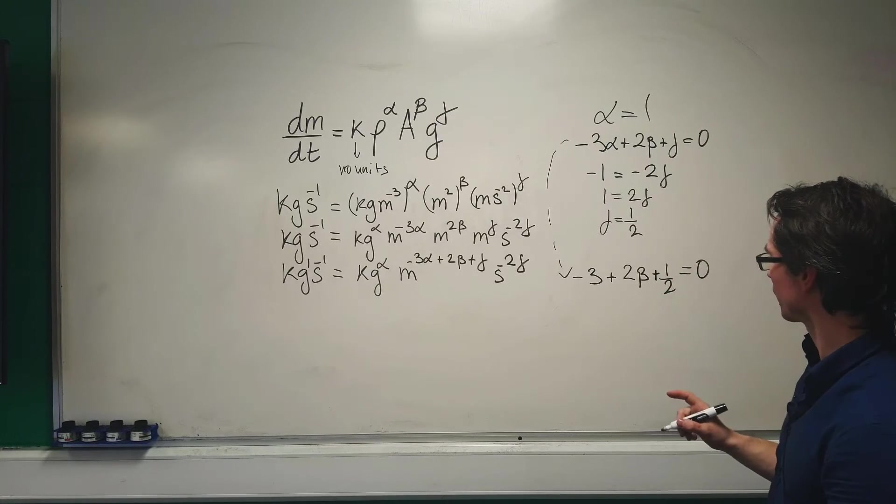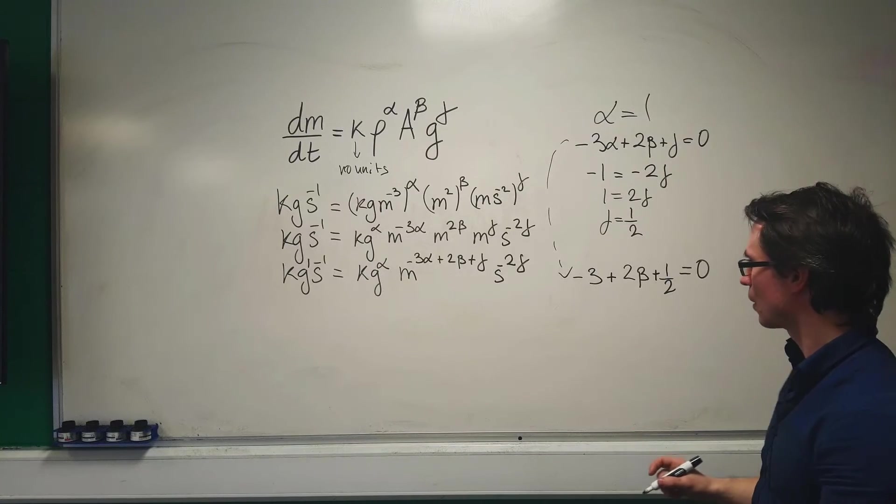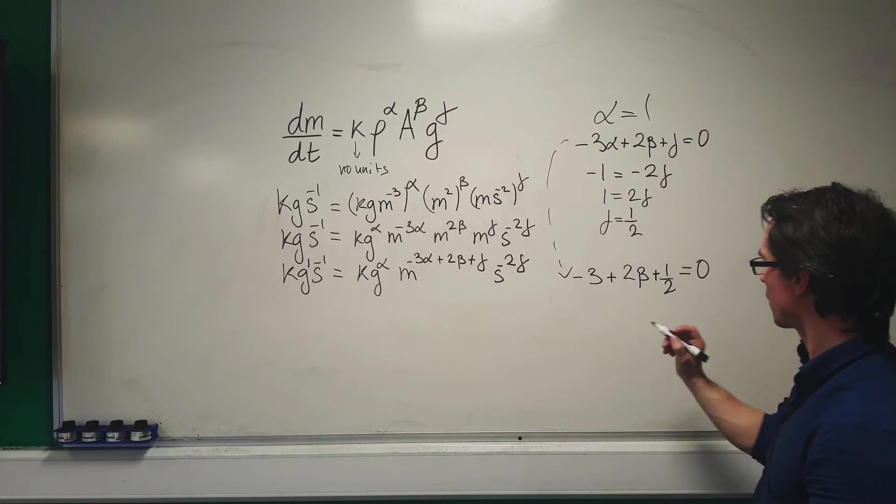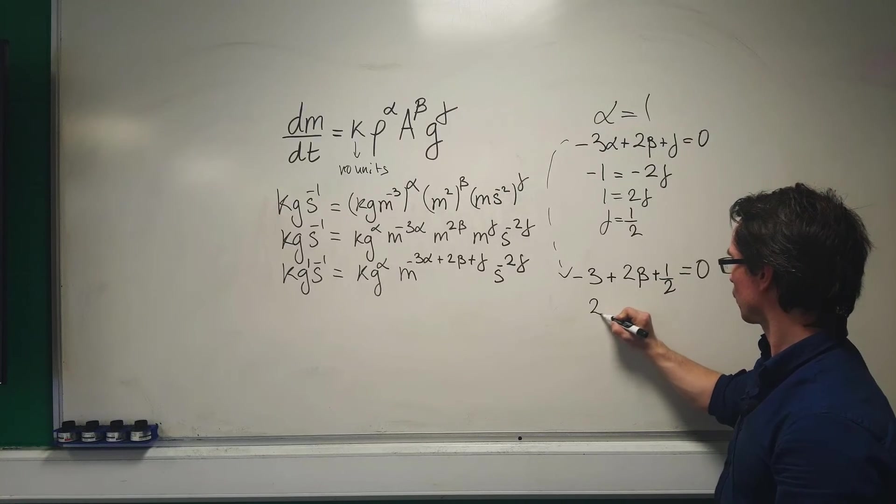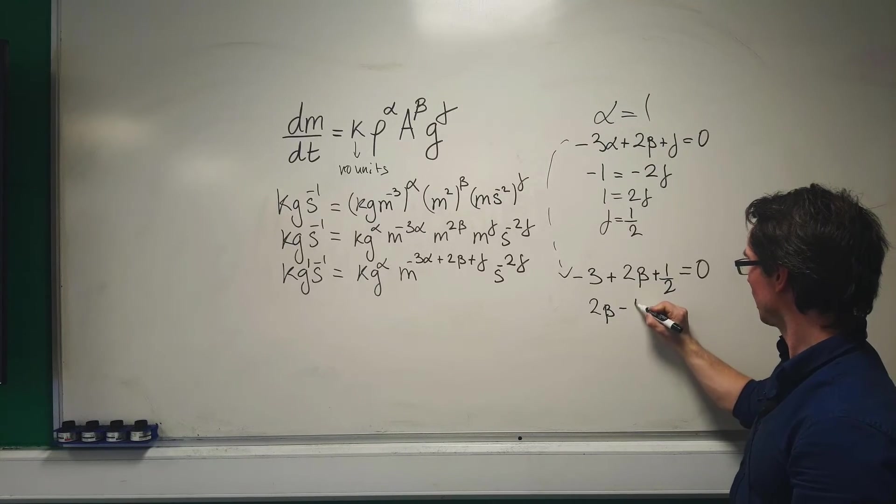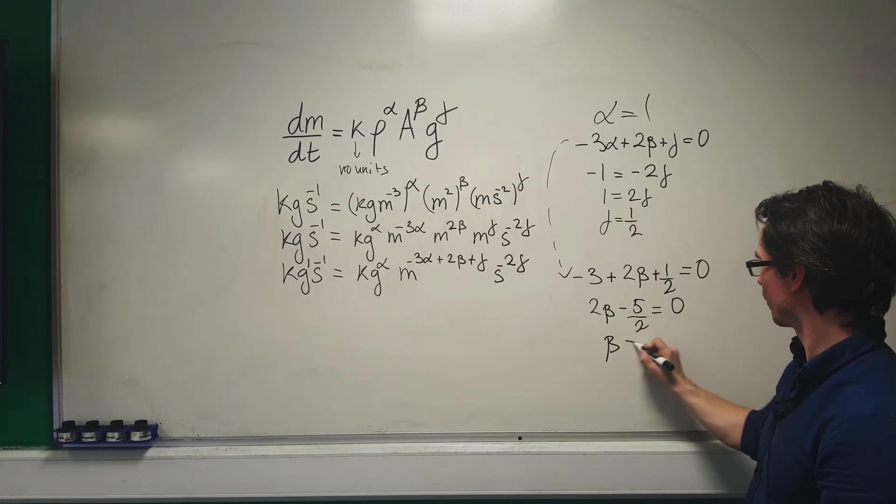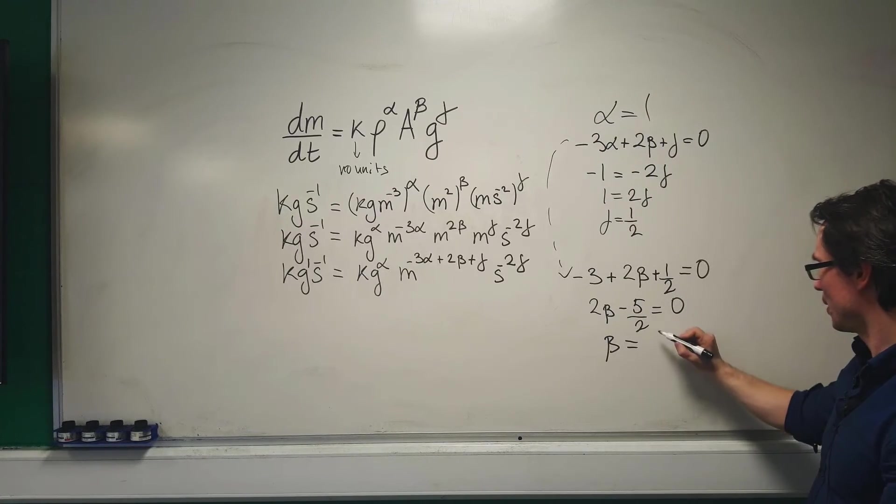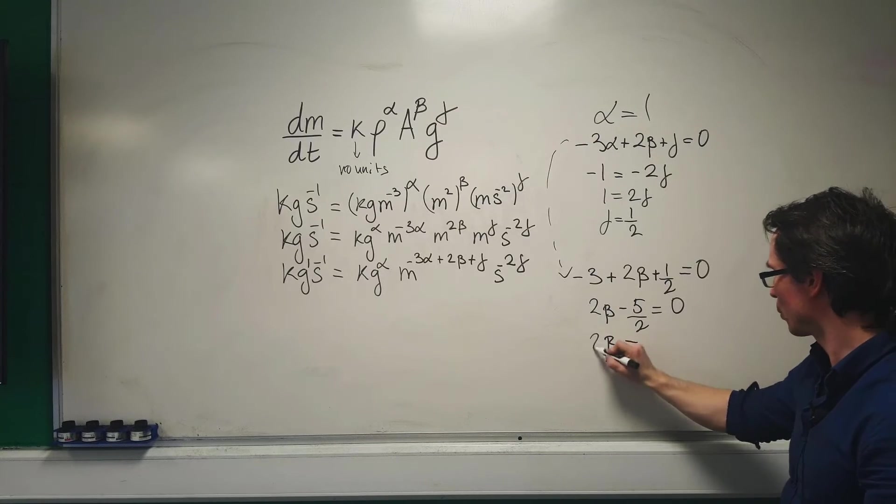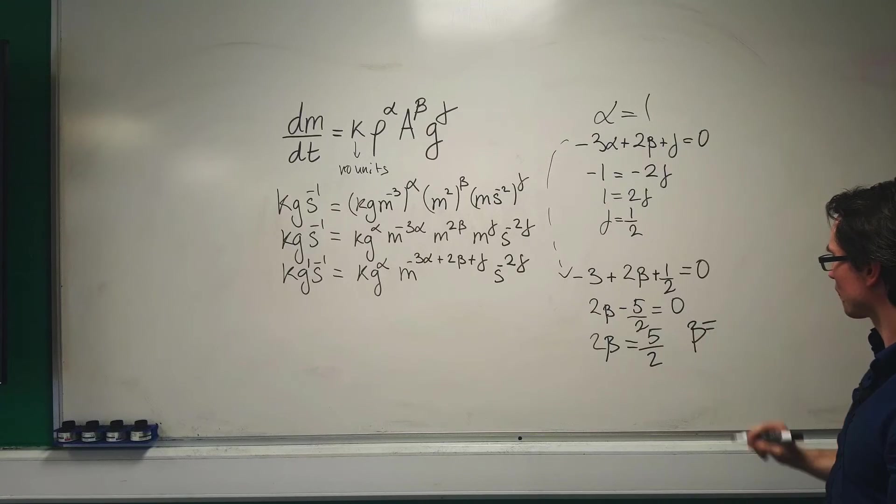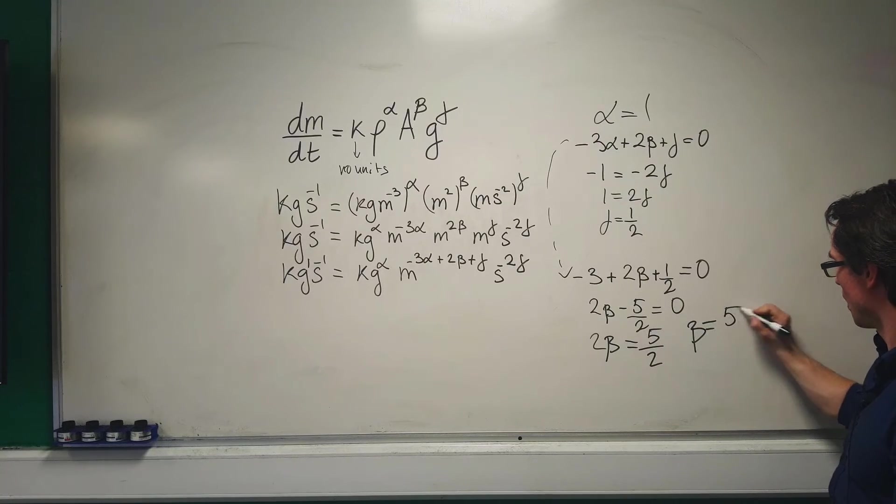We can now find beta. -3 + 1/2 = -5/2, so 2β - 5/2 = 0. Therefore 2β = 5/2, meaning beta equals 5/4.